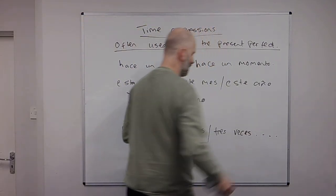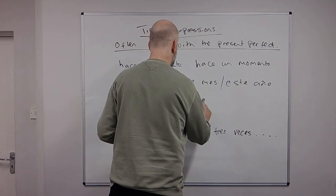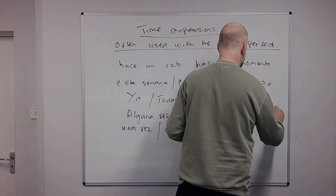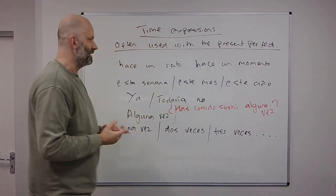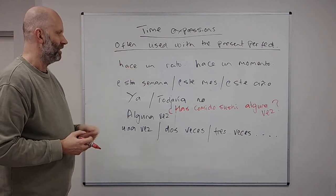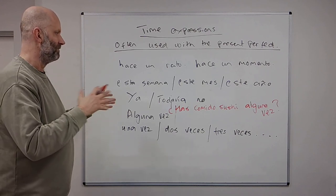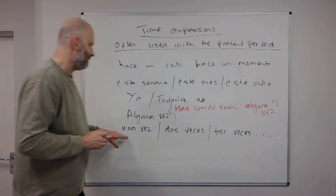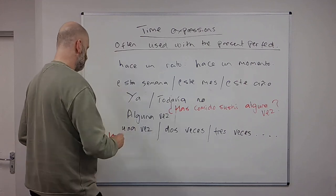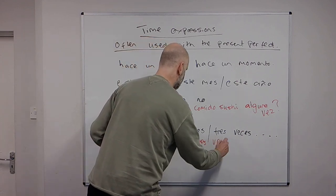Alguna vez means sometime. You could say something like, it's sort of like saying ever, have you ever done something. Has comido sushi alguna vez? It's sort of like any time in your lifetime, have you at least done it once, rather than saying did you eat sushi this month or did you eat sushi last year. It's very open, it's unspecified at any time in the past. Also we can talk about how many times you've done something. He visitado Madrid tres veces. I visited Madrid three times.